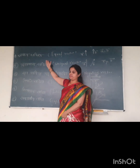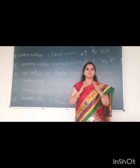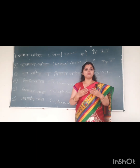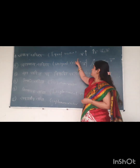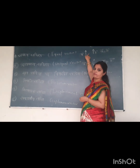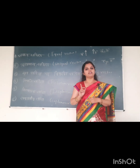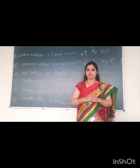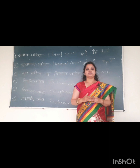The first type of vector is equal vectors (saman sadish). If two vectors A and B have the same magnitude and the same direction, then they are called equal vectors. For example, if vector A has a value of 3 and vector B also has a value of 3, and if vector A is going in the south direction, then vector B must also move in the south direction. Vectors with the same direction and same magnitude are called equal vectors.